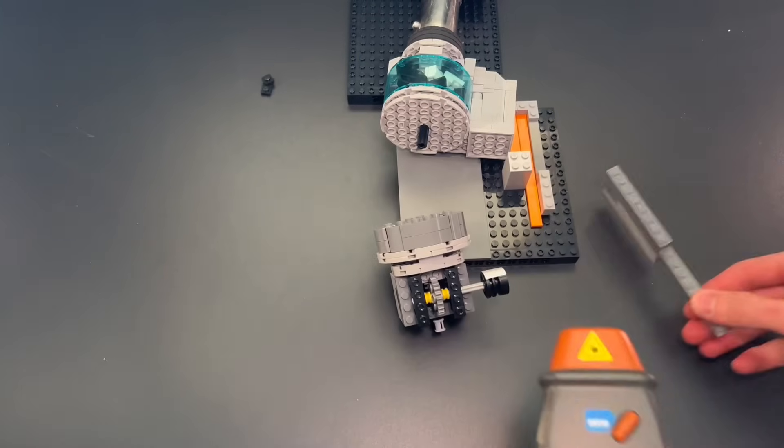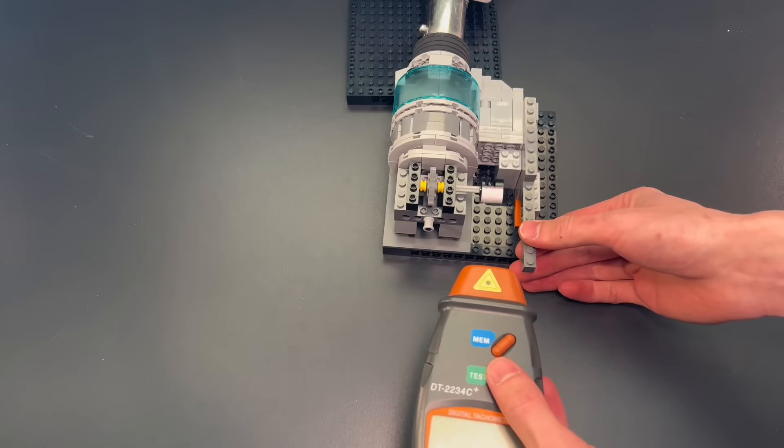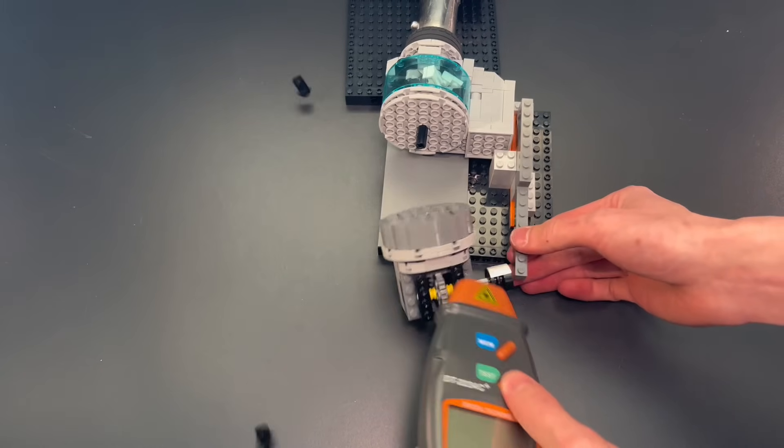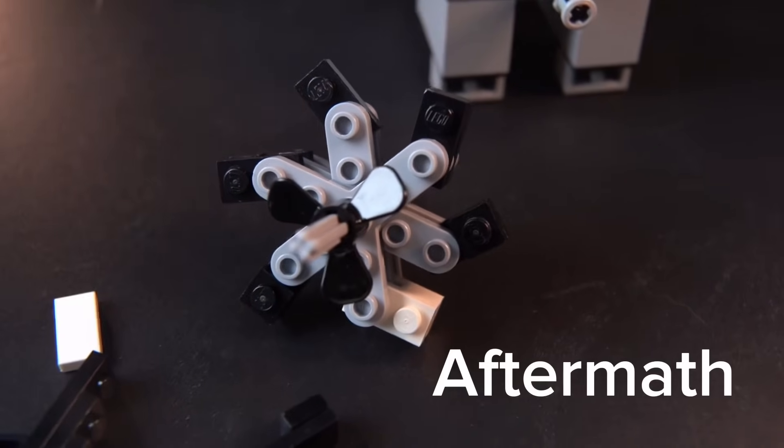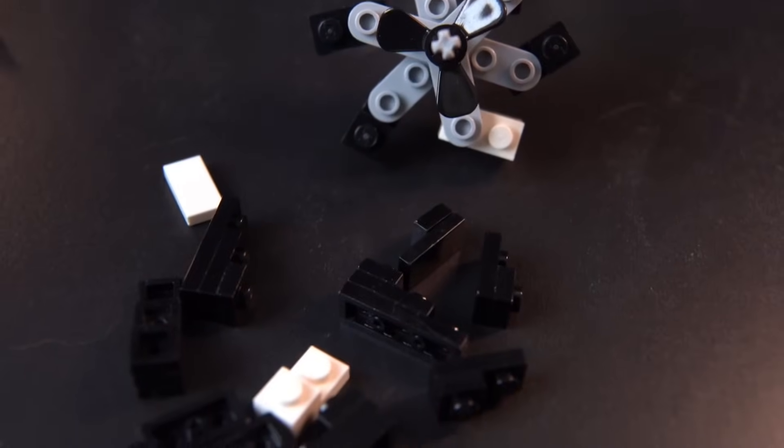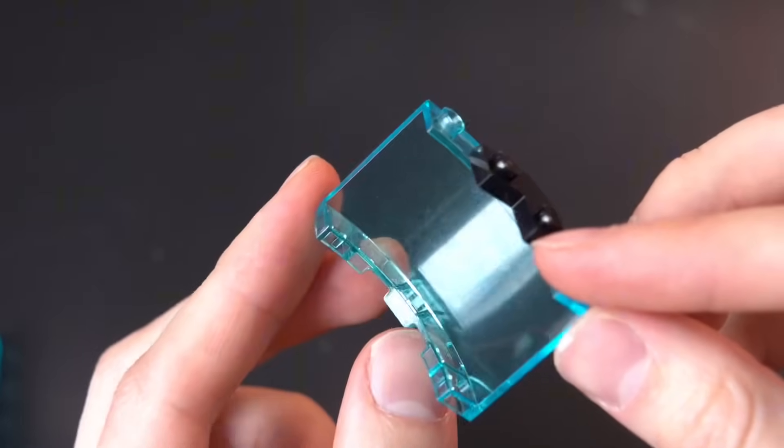If you saw my last video, you know we experienced something of a rapid unscheduled disassembly. Here's what's left of the rotor blade I had to go fishing out of the vacuum, and this is the piece that flew out the side.